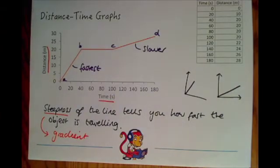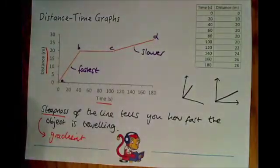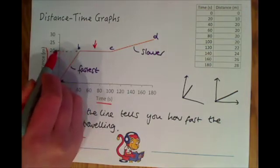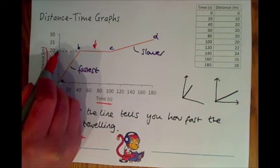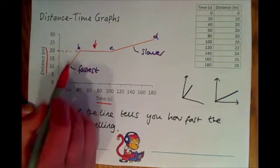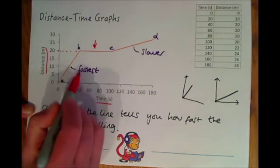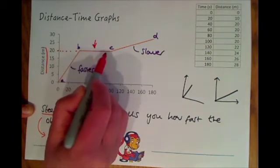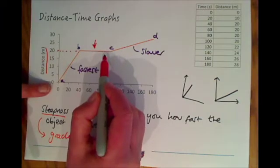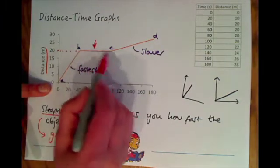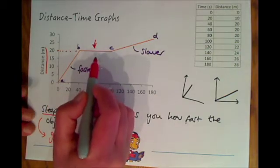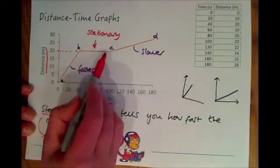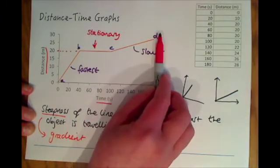Now let's concentrate on the section between b and c because this is really important as well. If we look here at this point, the distance travelled is still 20. So it started off at zero, between a and b travelled 20 meters in 20 seconds, but then it doesn't change after that between b and c. At c it's still only 20 meters away from where we started. So any flat points on these distance time graphs show that the object is stationary. It's not moving, so between b and c it's stationary and then it moves away again.